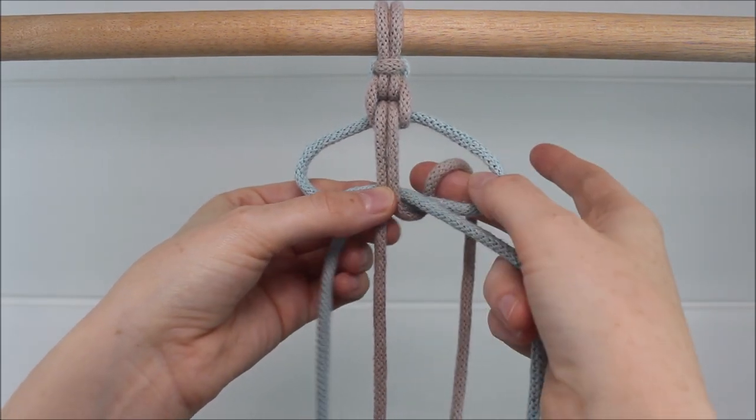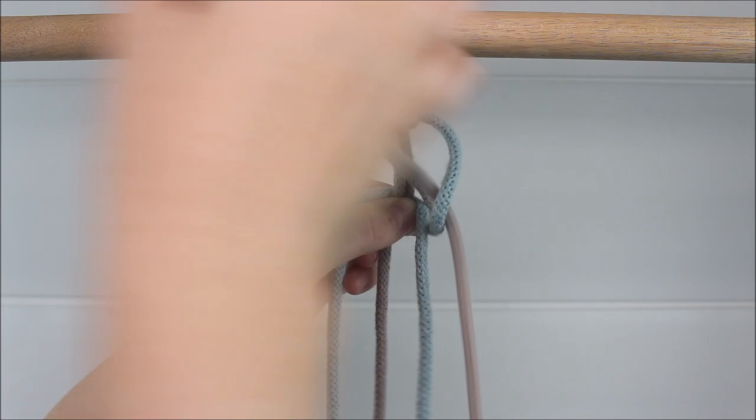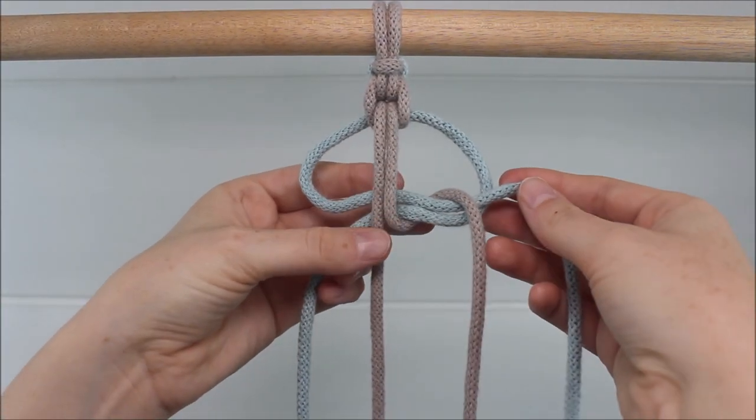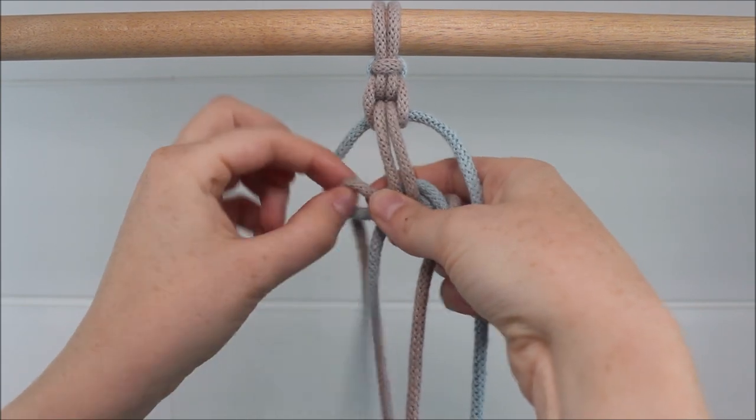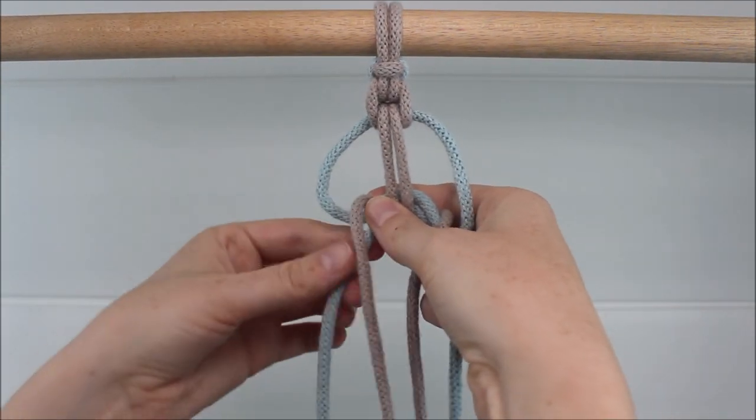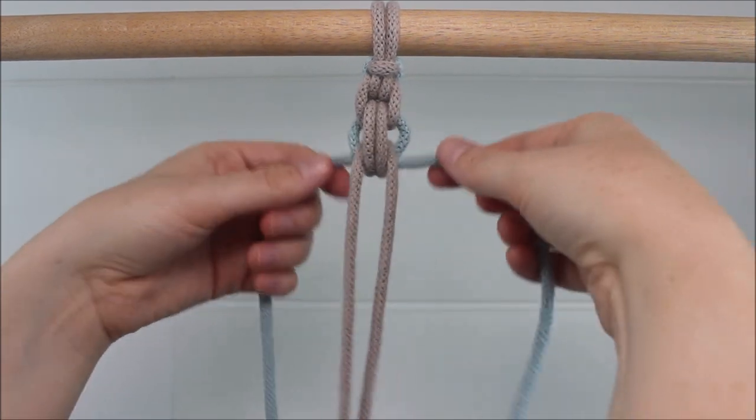Take the right cord up behind and through the right loop. Take the side on the left, behind, and around to go through the loop on the left. Pull it nice and tight.